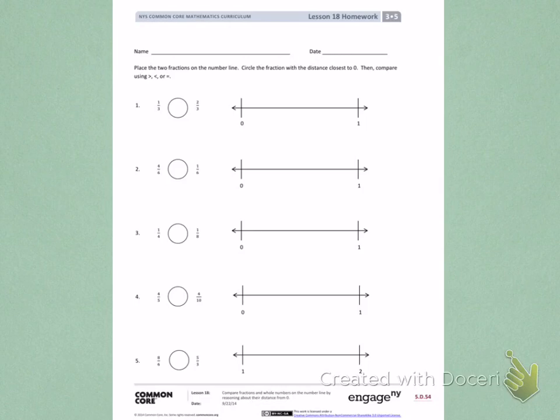On number 1, I see that both denominators are 3, telling me I should partition my number line into thirds. So I'm going to carefully divide my number line into three equal parts. Then I'm going to label my fractions: 0 thirds, 1 third, 2 thirds, 3 thirds.